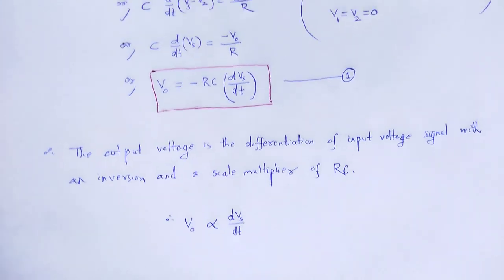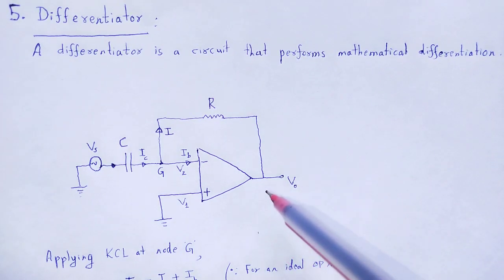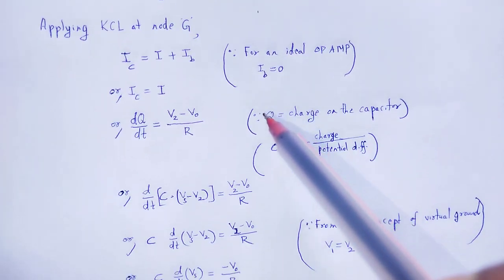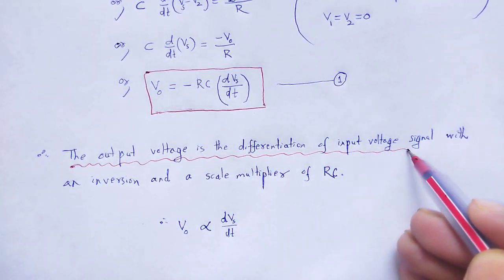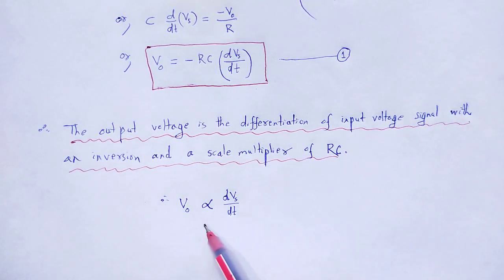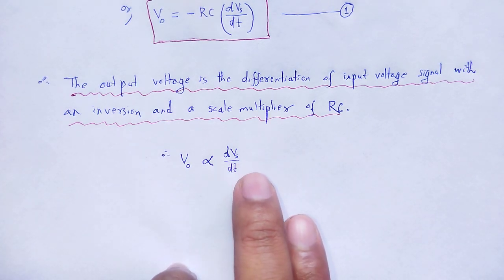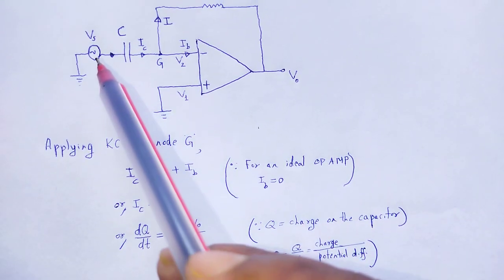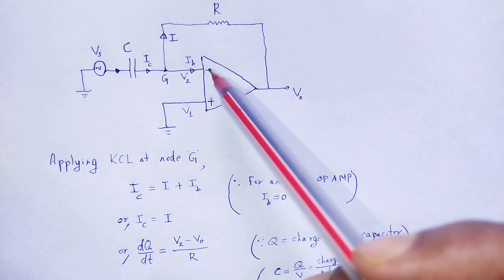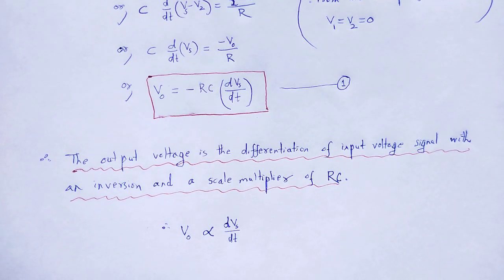So, with the help of this video lecture, we understand how a differentiator circuit is created by using an op-amp, and the mathematical expression for the output voltage. The output voltage is the differentiation of the input voltage signal with an inversion and a scale multiplier of RC. There is a negative sign because we provide the signal through the inverting terminal. Thank you.